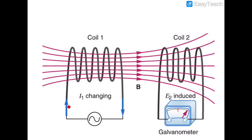Faraday conducted another experiment using two coils placed some distance apart. He connected a galvanometer to coil two and an alternating current source to coil one. When he switched on the circuit for coil one, he observed that current was induced in coil two even though there was no physical or electrical contact between them.